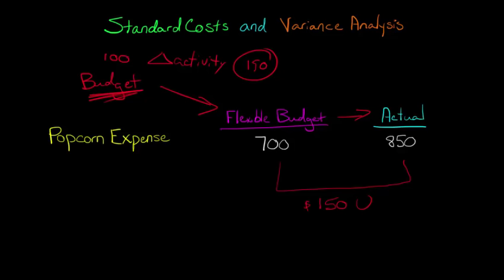We've got this red flag — maybe a manager should look into this. But we still don't understand: is it because of the price — did we spend too much money on the popcorn? Or is it because of the quantity — did we use too much popcorn? Are we putting too much popcorn into each bucket? What's driving this unfavorable variance?